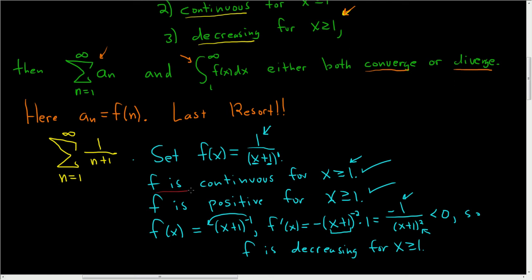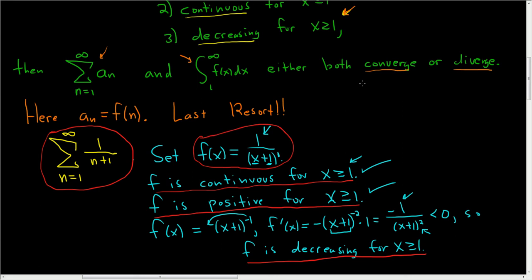So it's continuous, we took care of that. It's positive. And it's decreasing. So those are the three conditions for the integral test. That means that our series right here and the improper integral of this guy will either both converge or both diverge. So let's look at the improper integral.